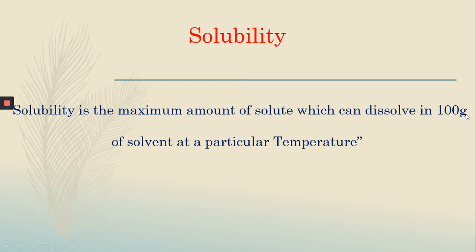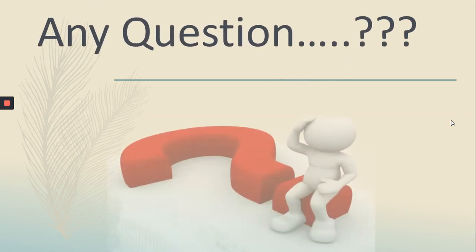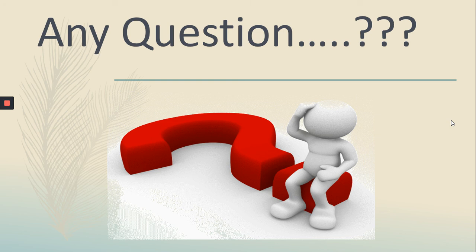For solubility, the solvent must be exactly 100 grams, not more than 100 grams. The maximum amount of solute dissolved in 100 grams of solvent at a specific temperature is known as solubility. Solubility is the maximum amount of solute which can dissolve with 100 grams of solvent at a particular temperature. These four definitions are in today's lecture. If you have any questions about these definitions, you can ask me. Thank you very much.